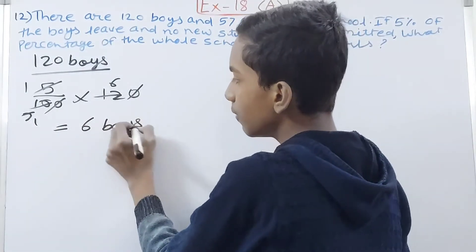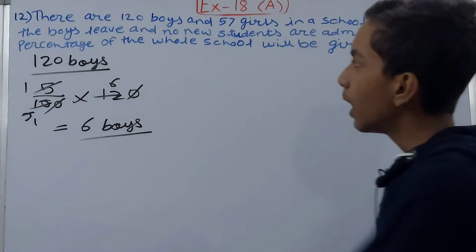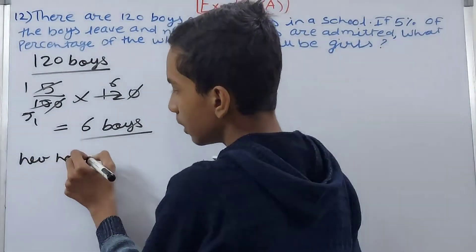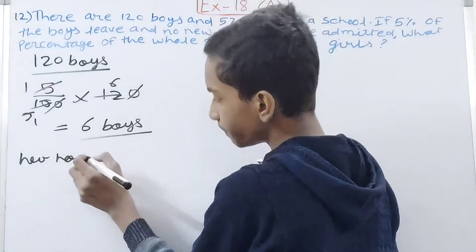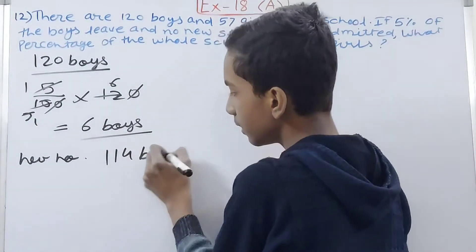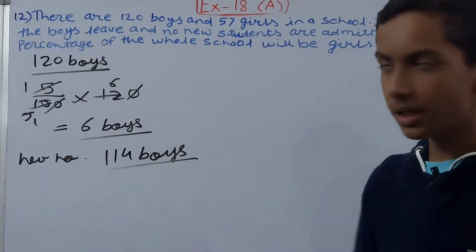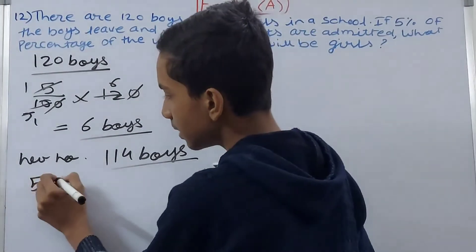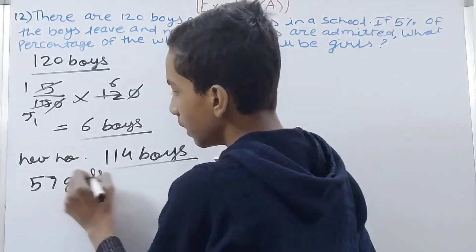So out of 120 boys, 6 boys will leave the school. The new number of boys becomes 120 minus 6, which is 114 boys. Now there are 114 boys and the number of girls is still the same, that is 57.